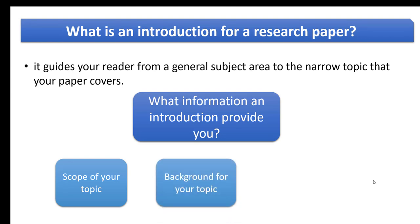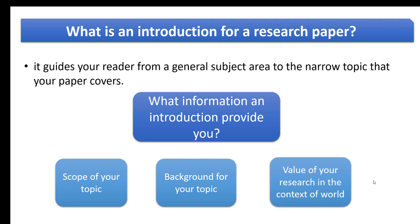The next point is background for your topic. Background is very important — it shows the reader what previous researchers have done on your specific topic and field, and what are the flaws and drawbacks which you are going to cover in your study. You can also call it the context of your paper. The third point is importance — why your research matters in the context of an industry or the world, the value of your research.